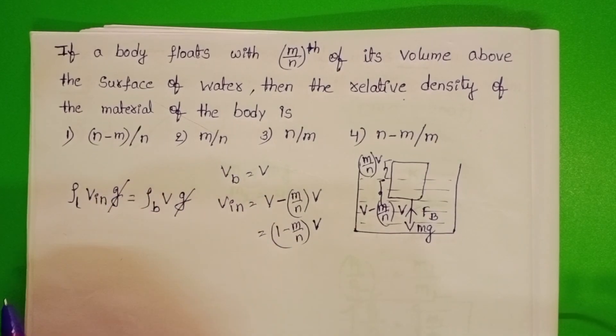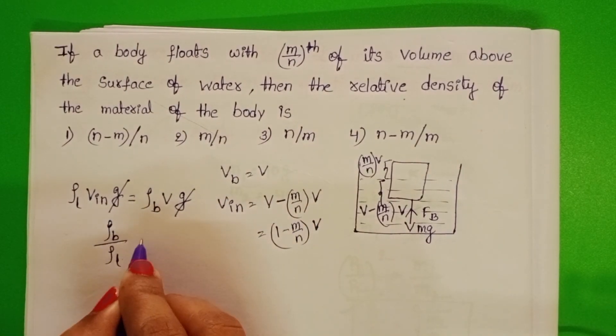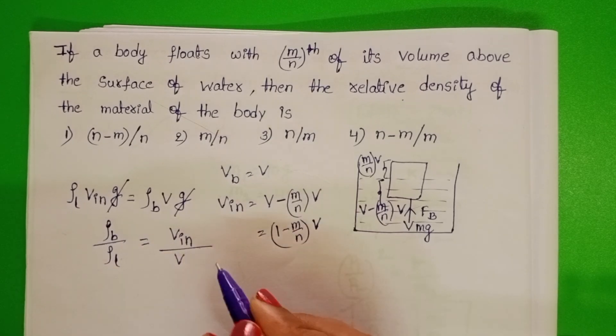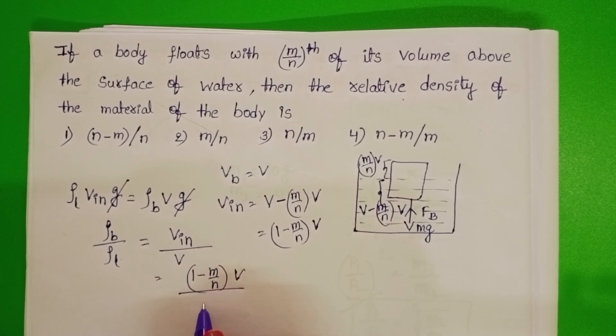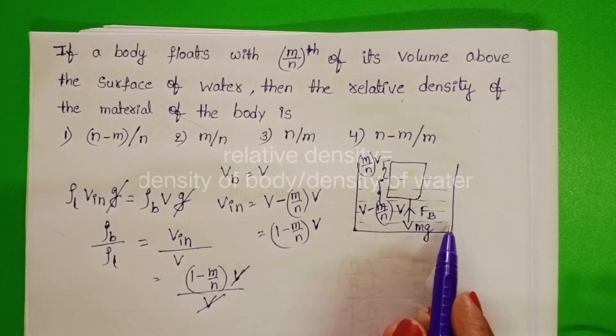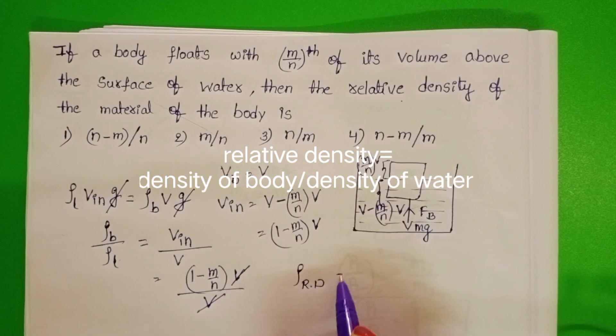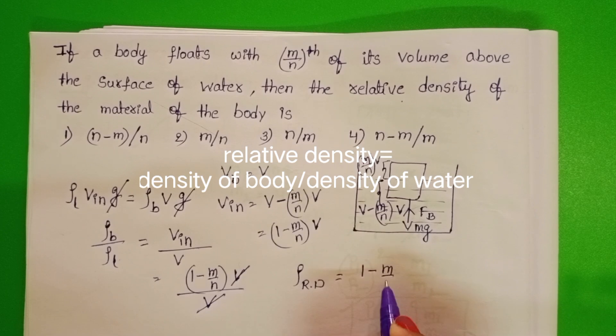On both sides, G gets cancelled. Density of the body by density of the liquid equals volume of the body inside the water by volume of the body. In place of V_in substitute 1 minus m by n times V. In denominator also V. Volumes get cancelled. Then relative density of the material equals 1 minus m by n.